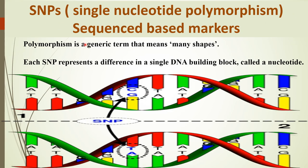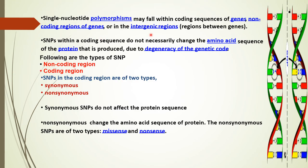Single Nucleotide Polymorphism comes under the type called sequence-based markers. Polymorphism is a generic term meaning many shapes. Each single nucleotide polymorphism represents a difference in a single DNA building block called a nucleotide. A SNP may fall within the coding sequence of a gene, or it could be present in the non-coding region, or in the intergenic region between genes. SNPs within a coding region do not necessarily change the amino acid sequence of the protein produced, due to degeneracy of the genetic code.